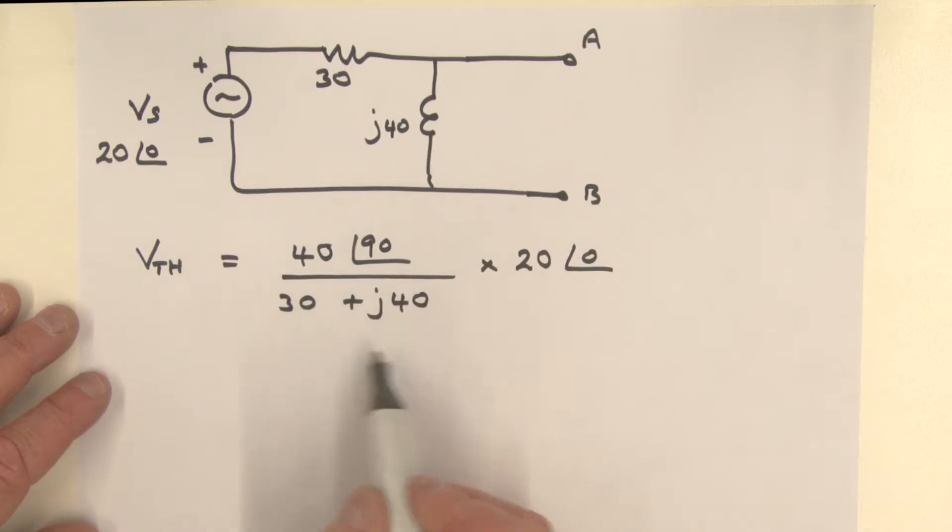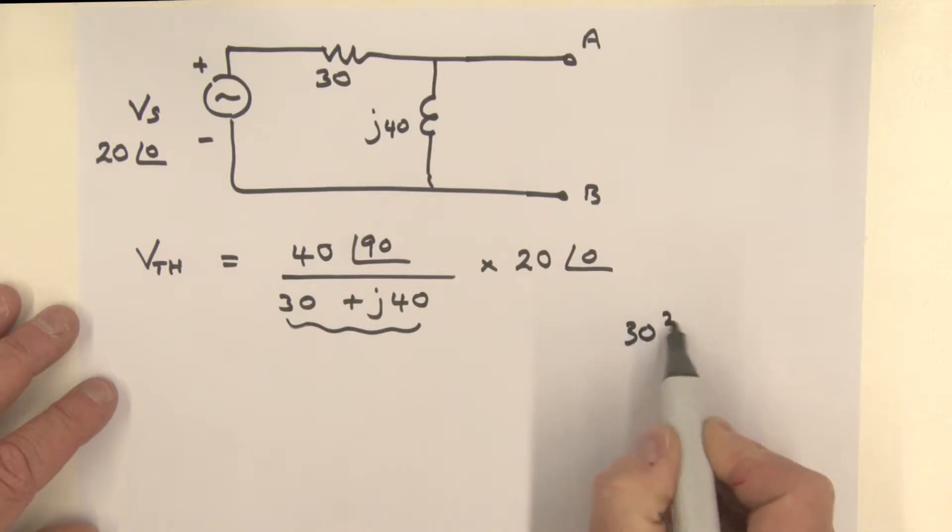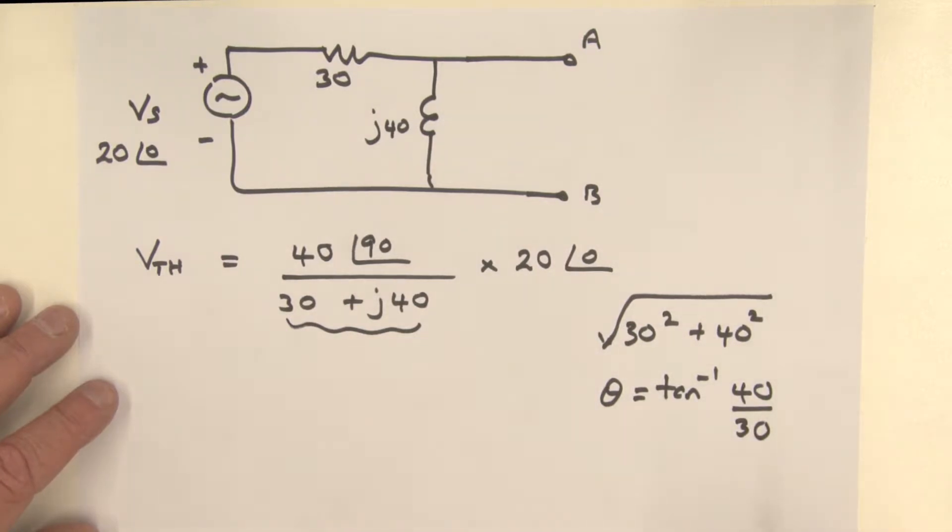What we need to do then is convert this part of our expression in the denominator into a polar form. Remember how we do that? Currently that bit is in rectangular form, so we need to find the magnitude, which is 30 squared plus 40 squared, and we take the square root of that. And as far as the angle is concerned, theta is the inverse tangent of the imaginary bit, which is 40, divided by the real bit, which is 30.